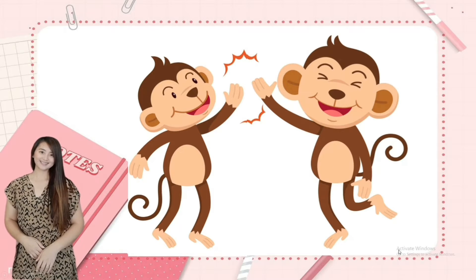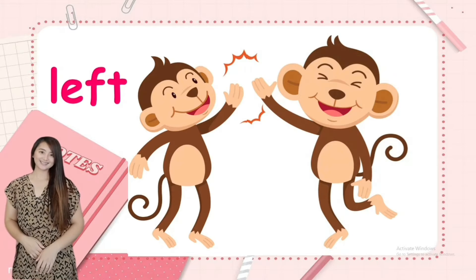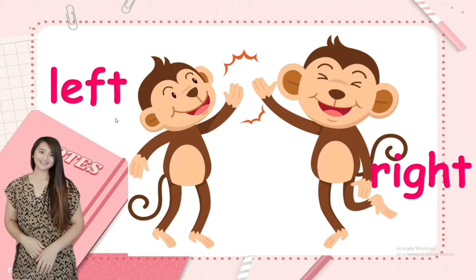Next, we have left and right. This monkey is on the left, and this monkey is on the right. Left, right. So left and right are opposite ways.